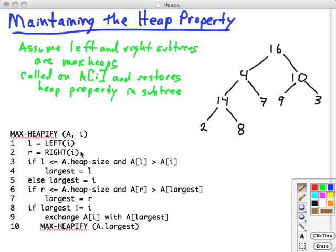First, it gets the indices of the left and right children using these procedures that do the basic math of left child is 2i, right child is 2i plus 1. Then it does a series of comparisons to figure out which is the largest - the left child, the right child, or is it still i? And in the end, if the largest is not i, it will exchange i with its largest child, and then it will recurse MaxHeapify on that child.